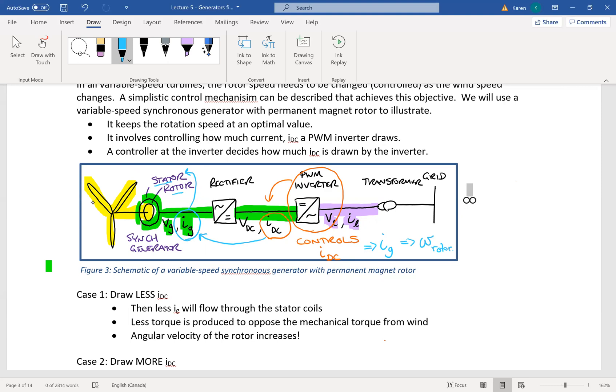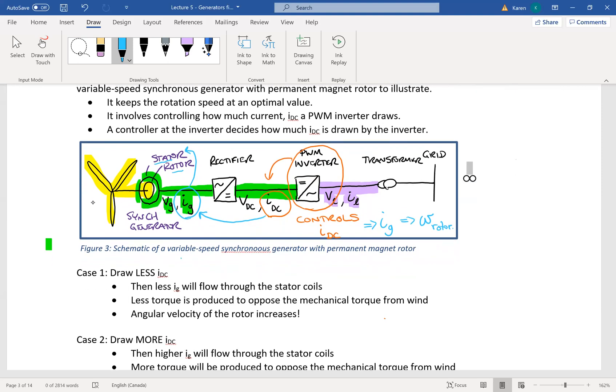And it's not a simple matter of just you decrease the current, therefore you increase the rotational speed. What actually is happening is when you decrease this current in the generator, then what happens is that you will then decrease the opposing torque.